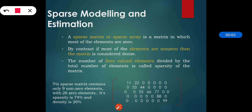In this section we will see sparse modeling and estimation. Sparse modeling mainly contains the sparse matrix, also called a sparse array, which is a matrix in which most of the elements are 0. By contrast, if most of the elements are non-zero then the matrix is considered as dense.